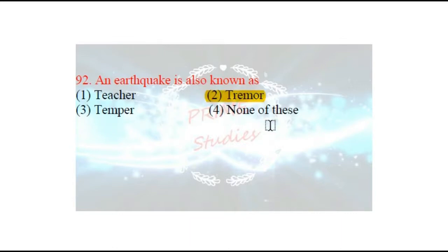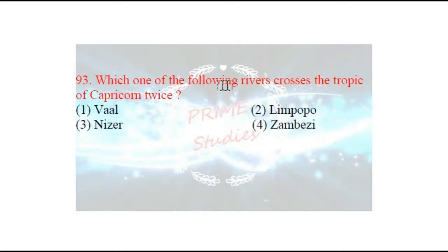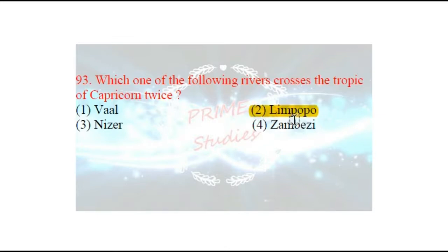Next question: which one of the following rivers crosses the Tropic of Capricorn twice? Makar Rekha ko do baar kaatati hai? The options are: Vaal, Limpopo, Niger, or Zambezi. The answer is Limpopo — the Limpopo river crosses the Tropic of Capricorn twice. It flows through South Africa, Botswana, and Mozambique and falls into the Indian Ocean. It is the second largest river in Africa flowing into the Indian Ocean.